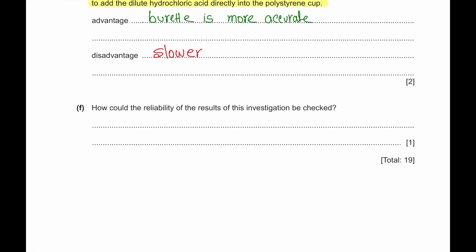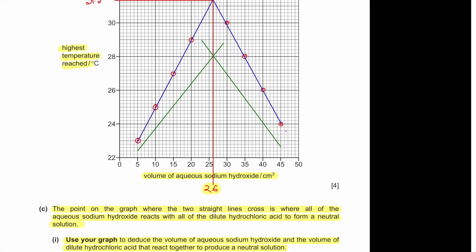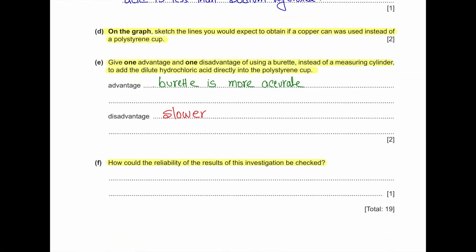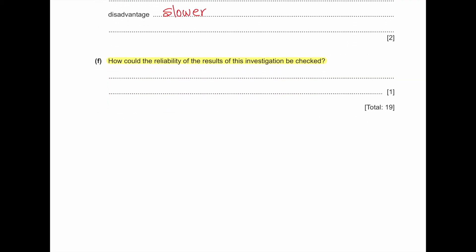Part F: how could the reliability of the results in the investigation be checked? This is a neutralization-type reaction, so to check the reliability we must repeat the experiment again and again.